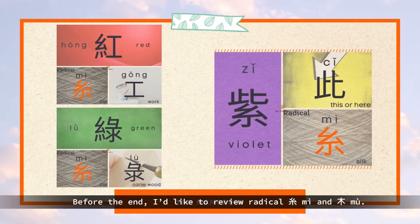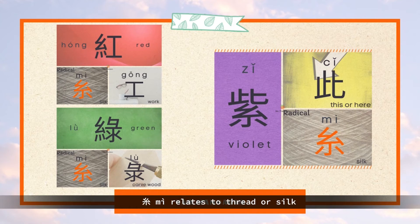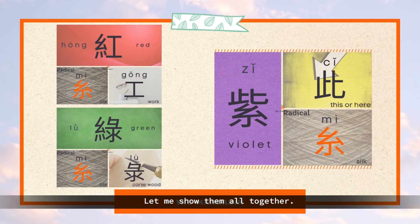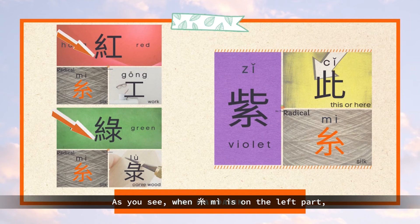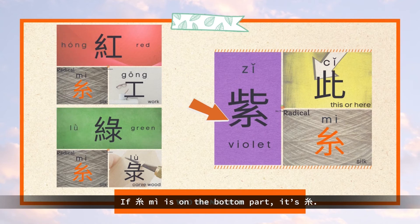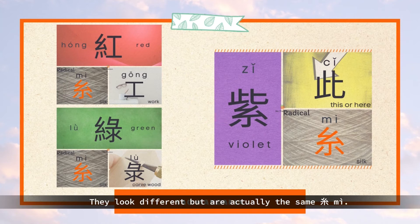Before the end, I'd like to review radical mi and mu. Mi relates to thread or silk, and we learned 红, 绿, and 紫. As you see, when mi is on the left part, the lower part is three dots. If mi is on the bottom part, it's written as mi. They look different but are actually the same mi.